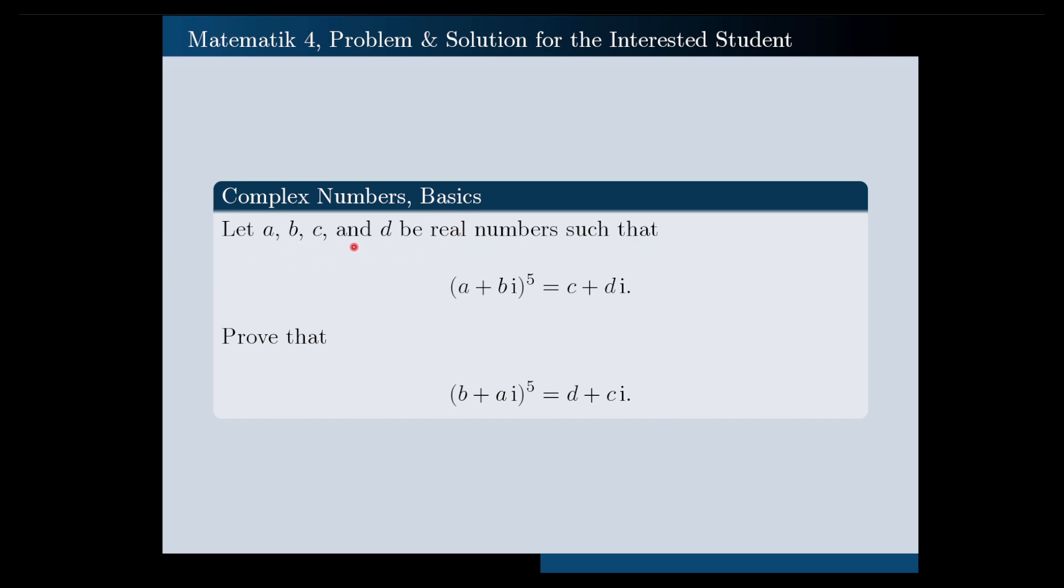Let a, b, c, and d be real numbers such that (a + bi)^5 equals c + di. Prove that (b + ai)^5 equals d + ci.